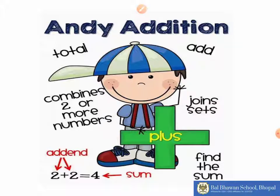For example, if 2 is added to 2, the result is 4. Here 2 and 2 are called addends and the result that is 4 is called sum.